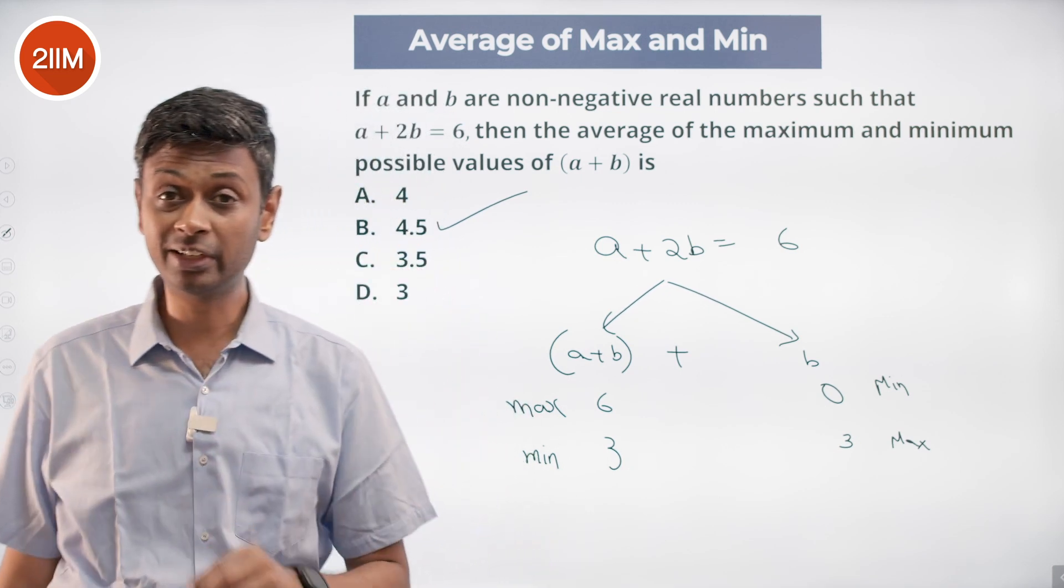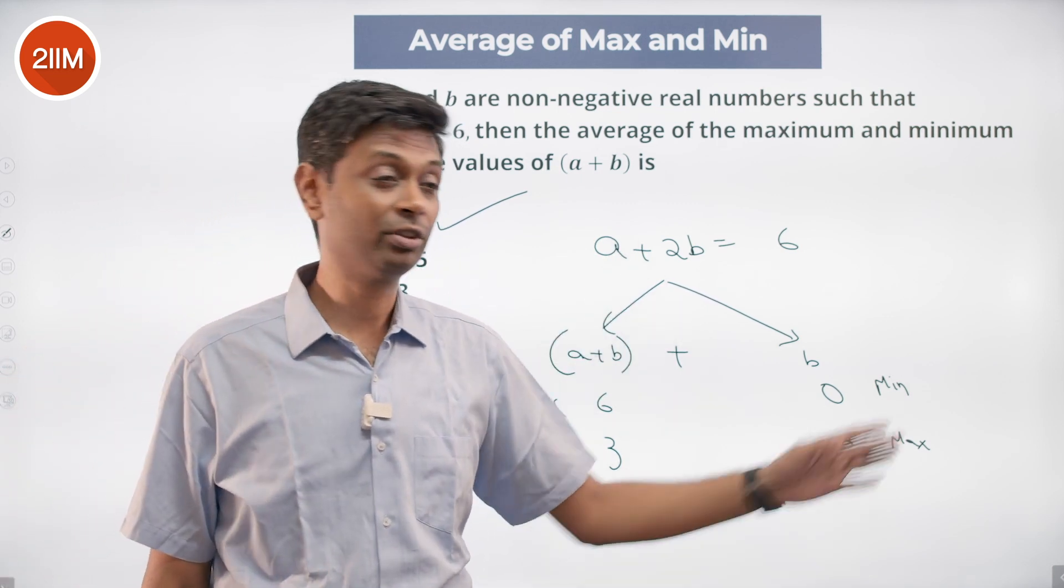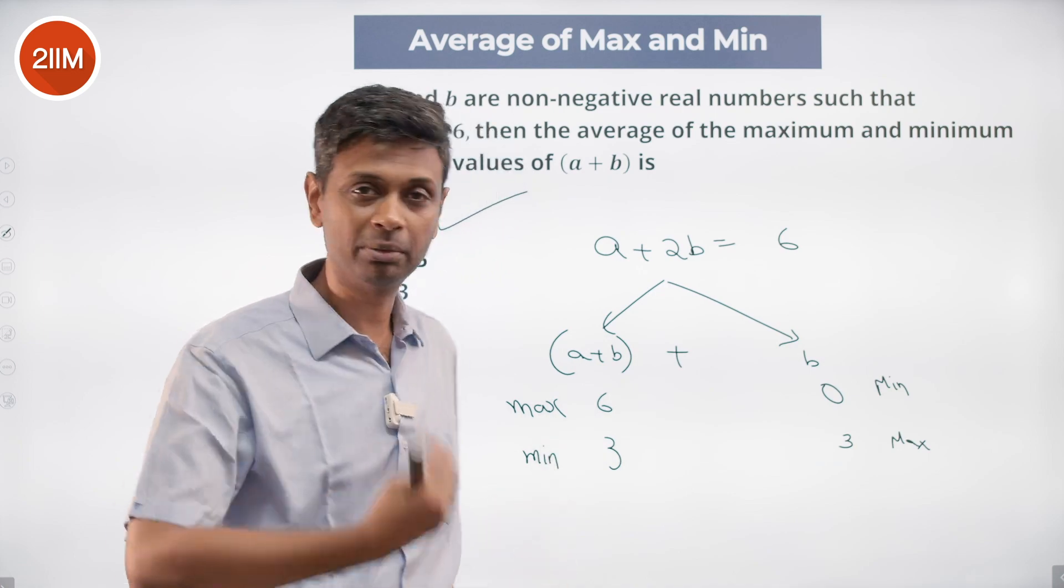Thinking about a plus b is tricky. Thinking about b is super simple. This is minimum, this is maximum. This is maximum, this is minimum. Done.